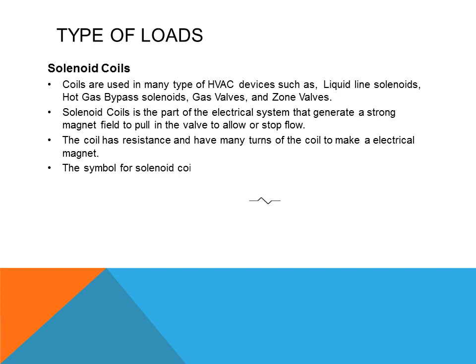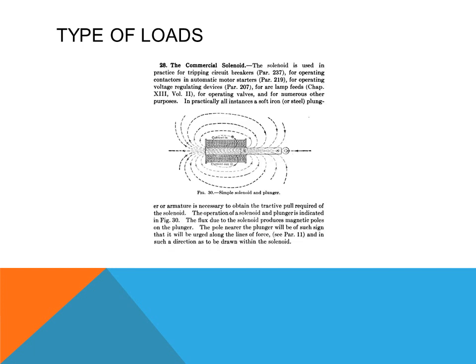Solenoid coils are loads. The symbol is simply a coil. Solenoids include many types such as hot gas solenoids, liquid line solenoids, and gas valves. Anything that has a coil that generates a magnetic field to pull a plunger up is considered a solenoid — anything that takes electrical power and does mechanical work. In the diagram of a solenoid, you can see the coil, the magnetic field around the coil, and an iron core or plunger in the center to absorb the energy.